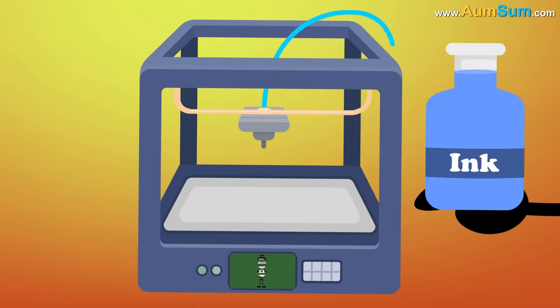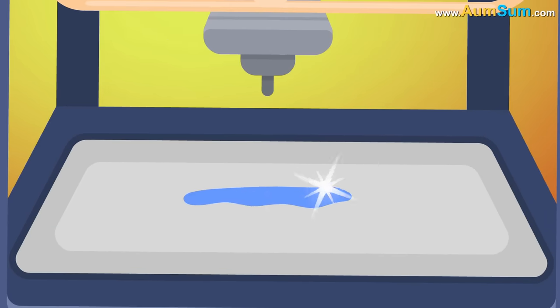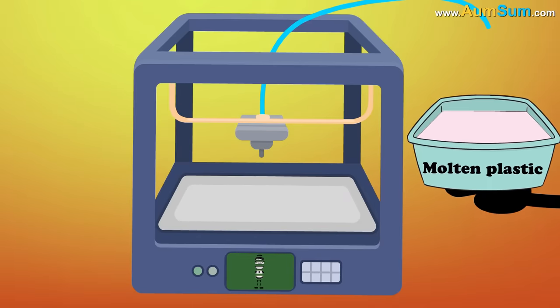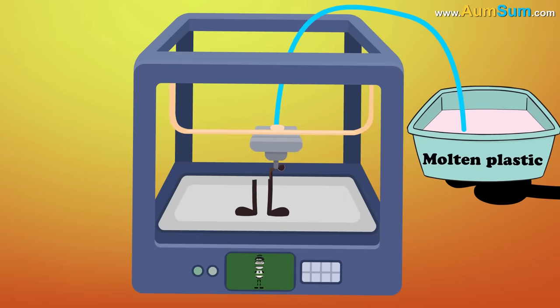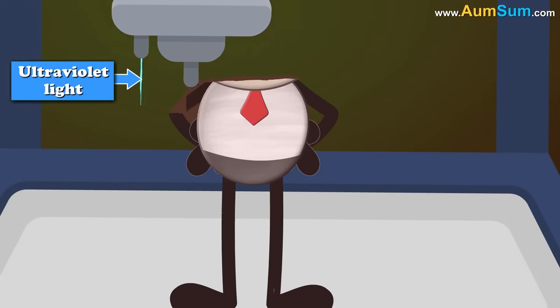Now, if we were to use ink to print them, it would not be possible to get the volume necessary to build a 3D model. Hence, instead of ink, the 3D printer may use molten plastic. The molten plastic is fused together using an adhesive or ultraviolet light.